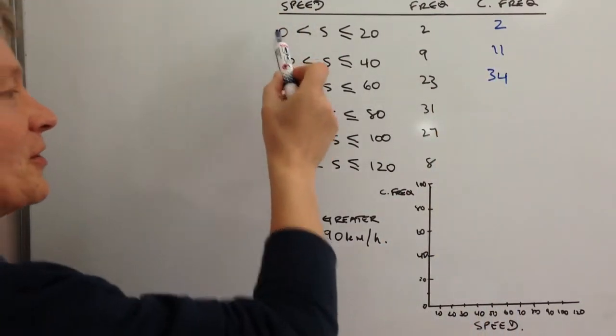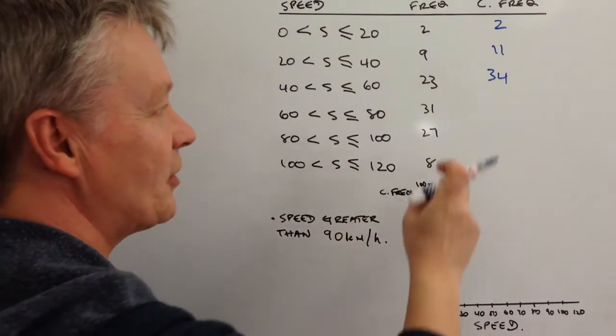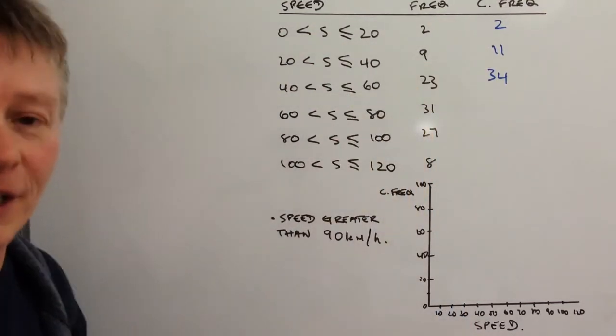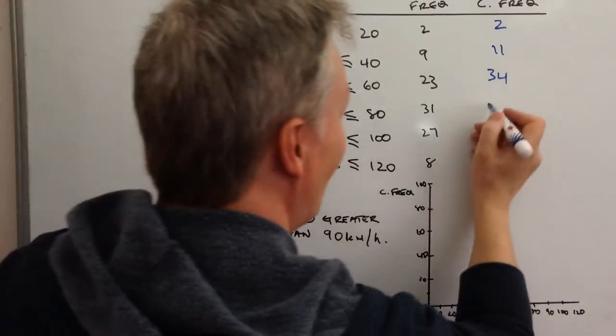The next group again between zero and 80 is going to be all of these four added up together and that's going to give you 65.